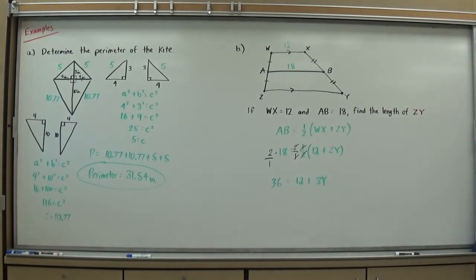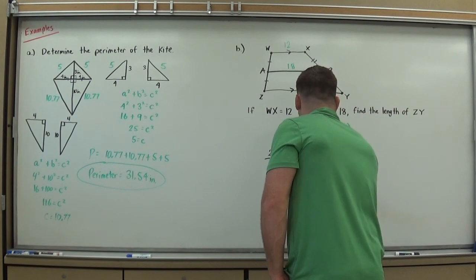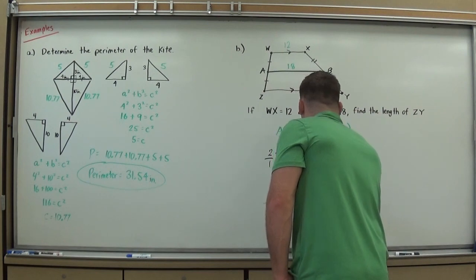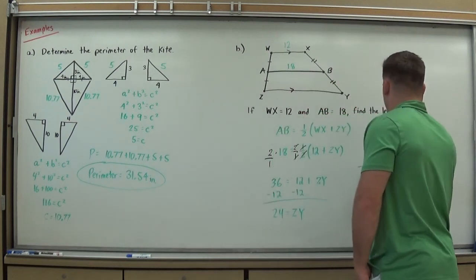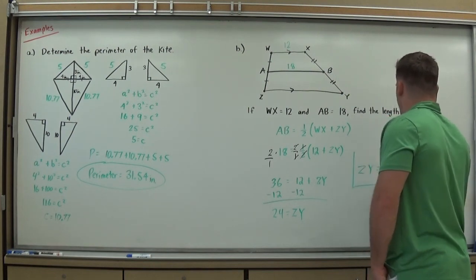And now just like any other variable I can solve by isolating. I'm going to get ZY, so I get rid of the twelve. I subtract twelve from both sides, thirty-six minus twelve is twenty-four, and I've got my answer. ZY should equal twenty-four.